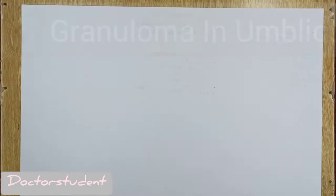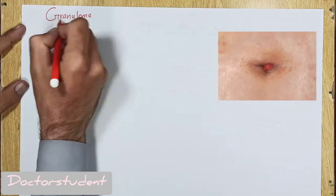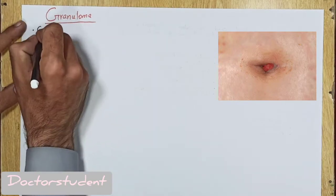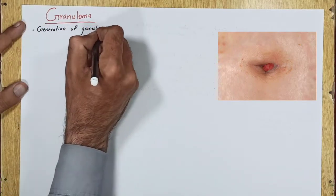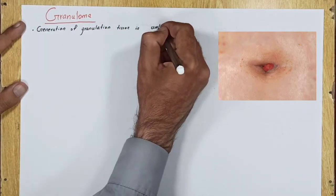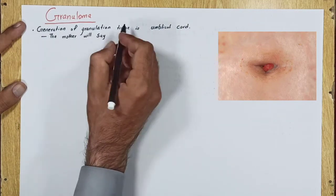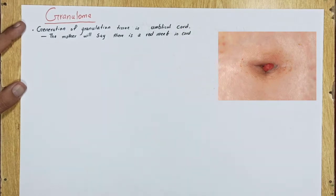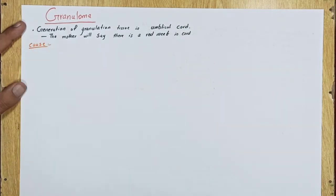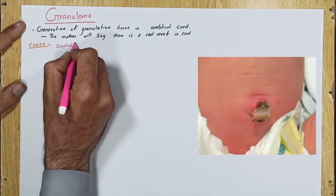Today our talk is about granuloma in the umbilical cord of infants. Generation of granulation tissue in the umbilical cord is called granuloma. The mother will say there is red meat in the cord. The cause of granuloma is omphalitis, which is caused by infection.